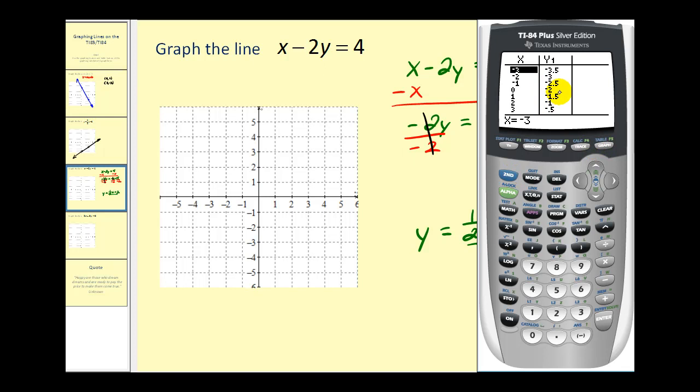So now we'll press second graph. And again, to avoid decimal values of y, we'll use the x-coordinates that are multiples of two. So let's use the point negative two, negative three, and zero, negative two. So negative two, negative three would be here. Let's also use the point zero, negative two, which is here.